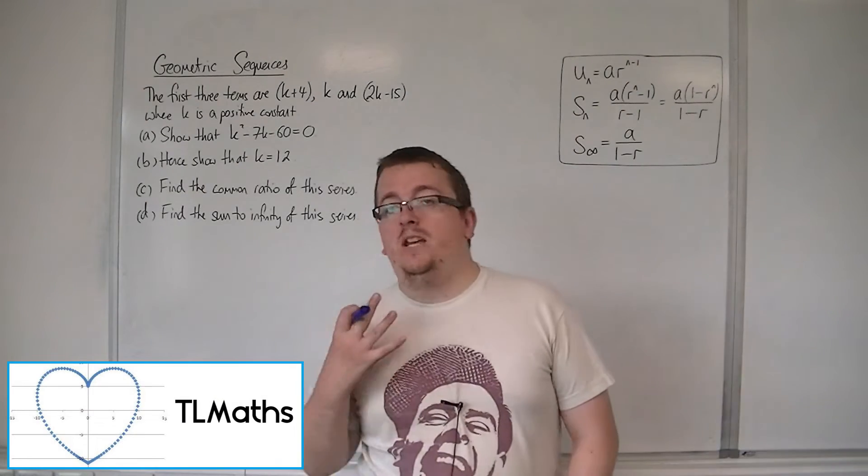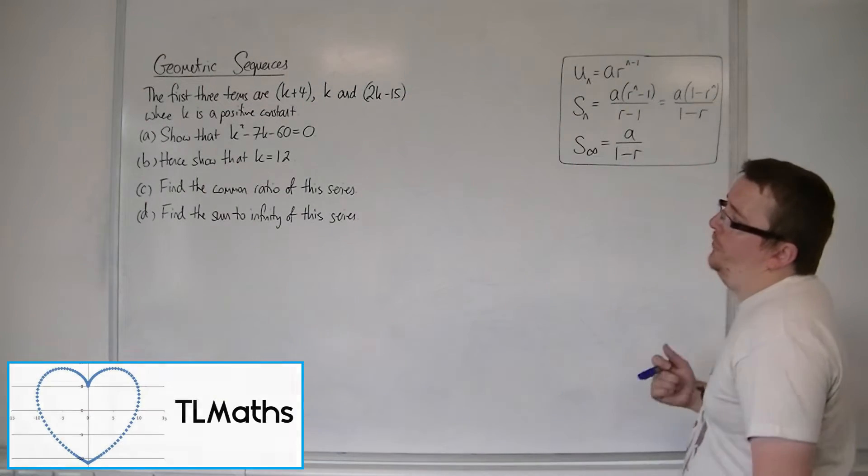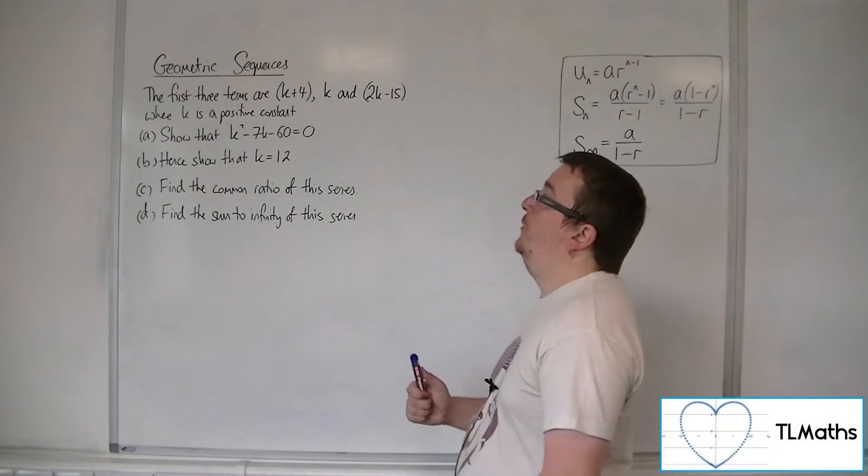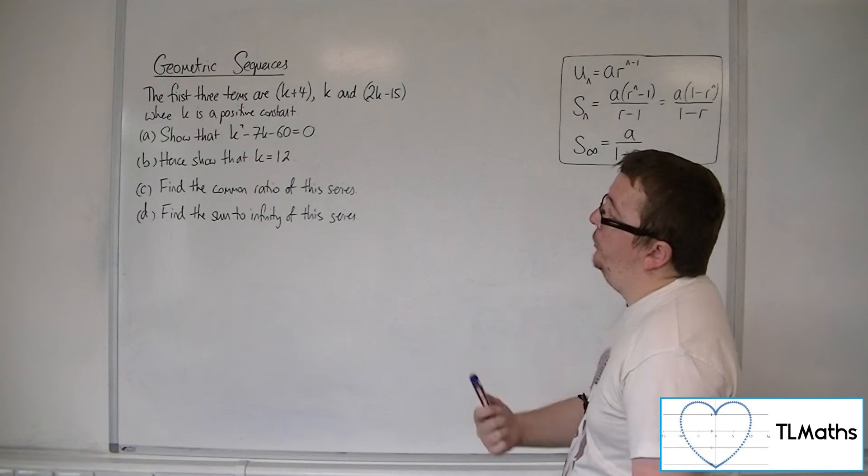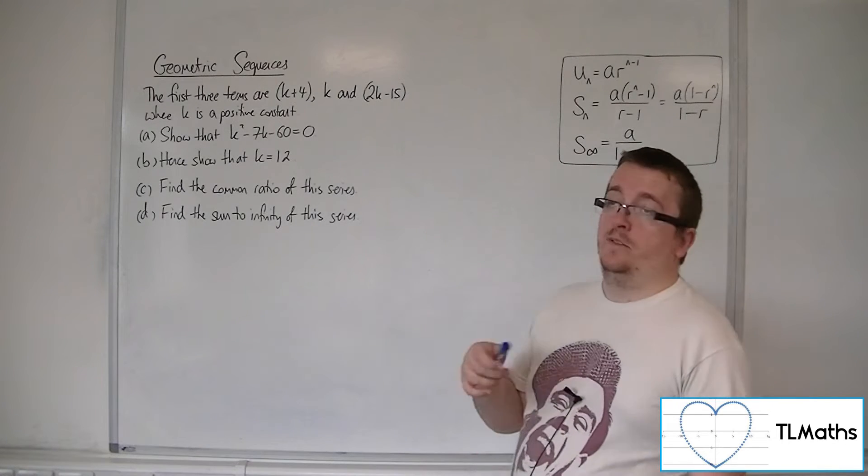Let's say that we have a geometric series, and the first three terms are k plus 4, k, and 2k minus 15, where k is a positive constant.